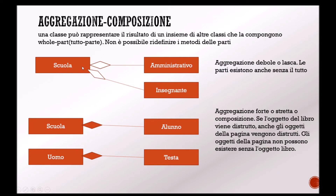What does this mean? It means that if the class 'scuola' (school) did not exist, the administrative class could still exist, because an administrative employee could be part of a company or work on behalf of third parties. The same for the teacher class — it could exist without the school class, because perhaps the teacher could teach privately. This is called a whole-part relation. The school in this case is the 'whole', and administrative staff and teacher are the 'parts'. So if the part is part of the whole in a non-essential way, it is called weak or loose aggregation.